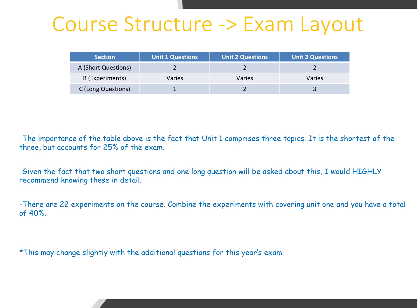This may change slightly with the additional question for this year's exams, but the bare bones will be: two from Unit 1, two from Unit 2, and two from Unit 3 in the short questions; one long question from Unit 1, two from Unit 2, and three from Unit 3. The extra questions could come from any of those units. The experiments obviously vary, but there are changes within the experiments as well, which we'll get to in a moment.